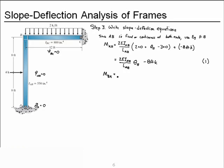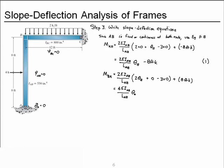The moment at the other end of the frame member, M_BA, is calculated by the same formula: 2EI for member AB over the length, with near node slope θ_B, far node slope θ_A = 0, minus 3 times the relative displacement (0), plus the fixed-end moment of positive 8 foot-kips. Consolidating terms gives M_BA = (4EI/L)θ_B + 8 ft-kips. We'll call this Equation 2.